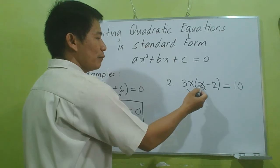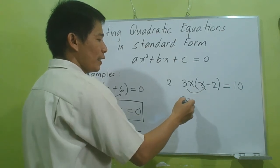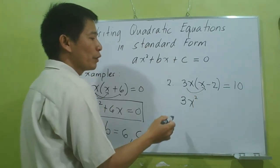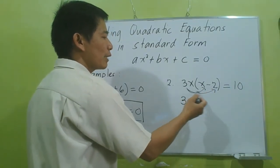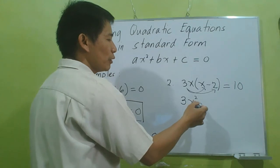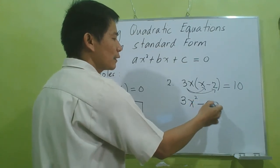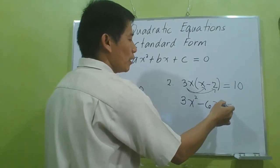We will multiply 3x by x: 3x times x is 3x². Then multiply again 3x by negative 2: 3x times negative 2 equals negative 6x. So we have 3x² - 6x = 10.